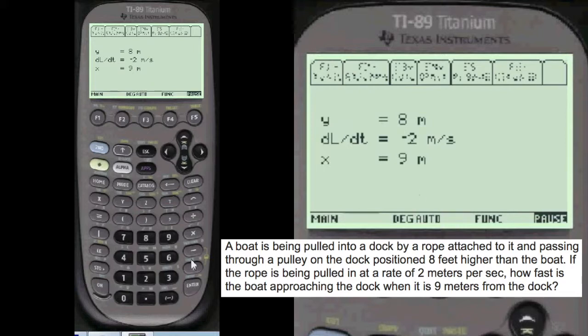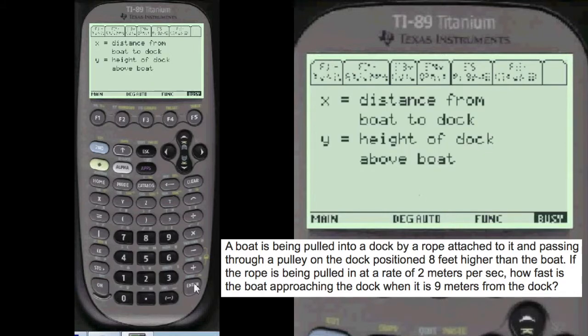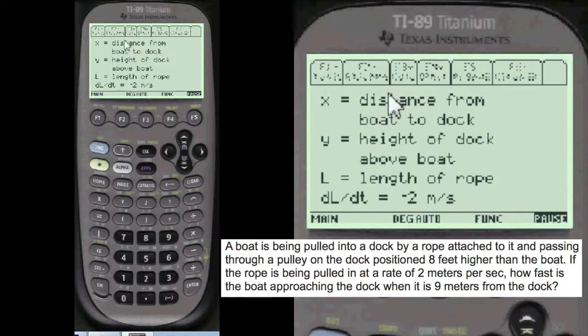And our distance from the dock is alpha 9 meters. I always show you what you've entered. You can change it if you want. I say it's okay. And I give you the parameters of what we're talking about here. x equals distance from the boat from the dock. And y equals the height of the dock above the boat. And L equals the length of the rope, which is the hypotenuse.